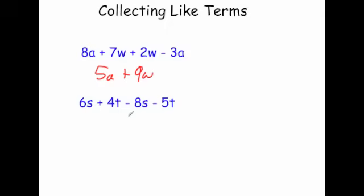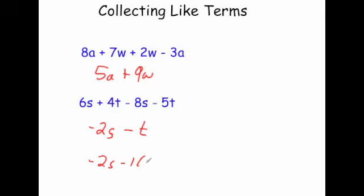Next: 6s plus 4t take away 8s take away 5t. We've got 6s take away 8s, which is equal to minus 2s. Then 4t take away 5t is equal to minus 1t — but in algebra you just write minus t, not minus 1t. So the answer is minus 2s minus t.